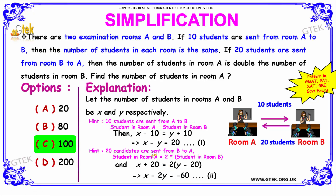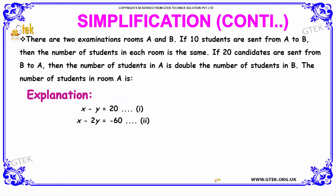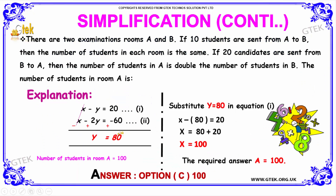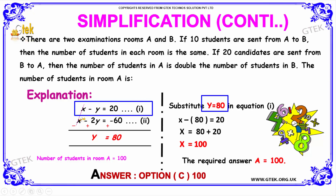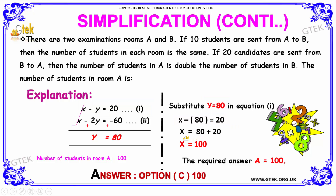Solving equation 1 and equation 2 together, we get Y is equal to 80. Substituting the value of Y equal to 80 in equation number 1, we get X minus 80 is equal to 20. Solving this equation, we get X is equal to 80 plus 20, which is equal to 100.